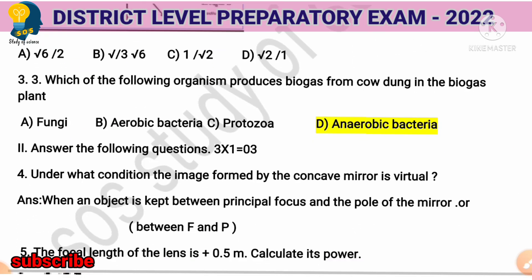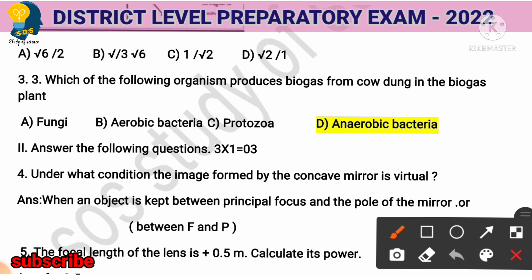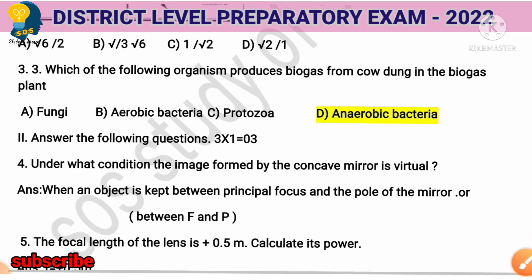Third question: Which of the following organisms produces biogas from cow dung in a biogas plant? The right answer is anaerobic bacteria. Biogas production from cow dung happens in the presence of anaerobic bacteria.